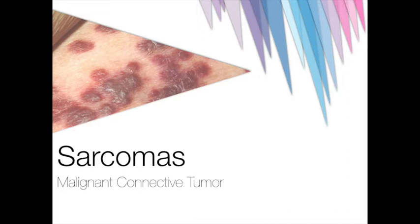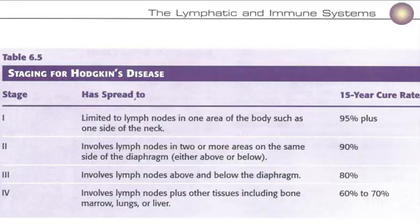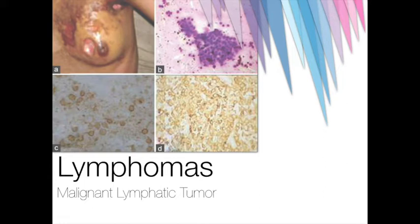A lymphoma is a general term applied to malignancies that develop in the lymphatic system. The two most common types are Hodgkin's disease and non-Hodgkin's lymphoma. Hodgkin's disease, also known as Hodgkin's lymphoma, is distinguished by the presence of Reed-Sternberg cells — large, cancerous lymphocytes identified by microscopic examination of a biopsy taken from an enlarged lymph node. Non-Hodgkin's lymphomas describes all lymphomas other than Hodgkin's lymphoma. In NHL, the cells of the lymphatic system divide and grow without any order or control, causing tumors to develop in different locations and potentially spread to other organs. The disease is described as low-grade, intermediate-grade, and high-grade. Treatment usually includes chemotherapy, radiation therapy, and possibly a bone marrow transplant.